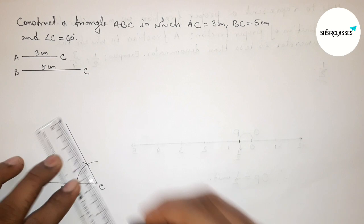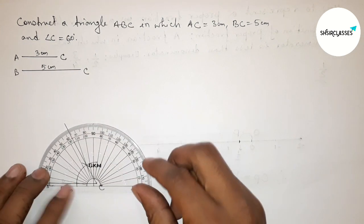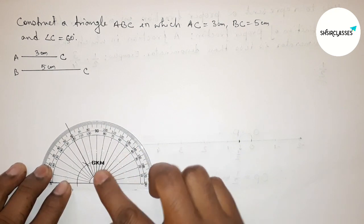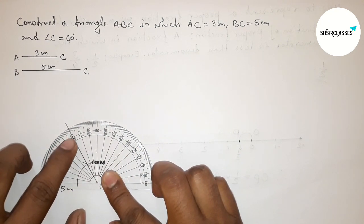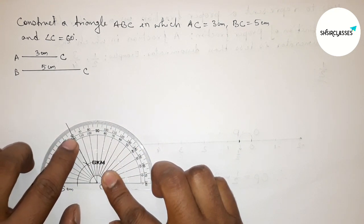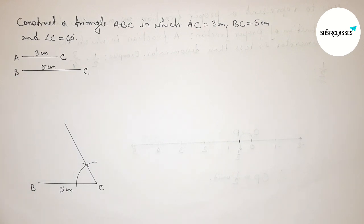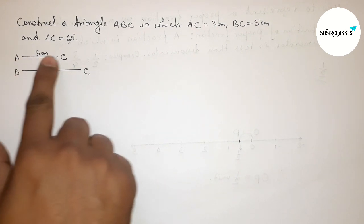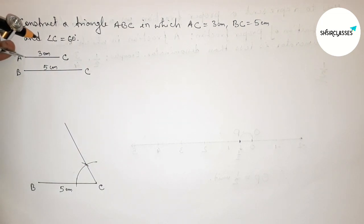Now joining this line to get the 60 degree angle. Checking this with the help of a protractor — placing the protractor perfectly — this is a 60 degree angle perfectly. So angle C equals 60 degrees.